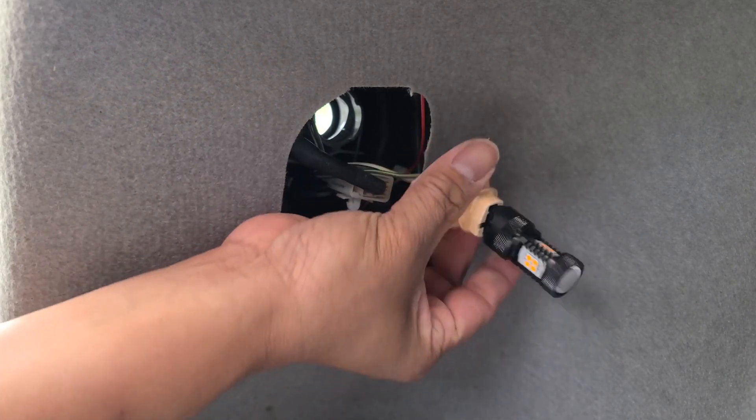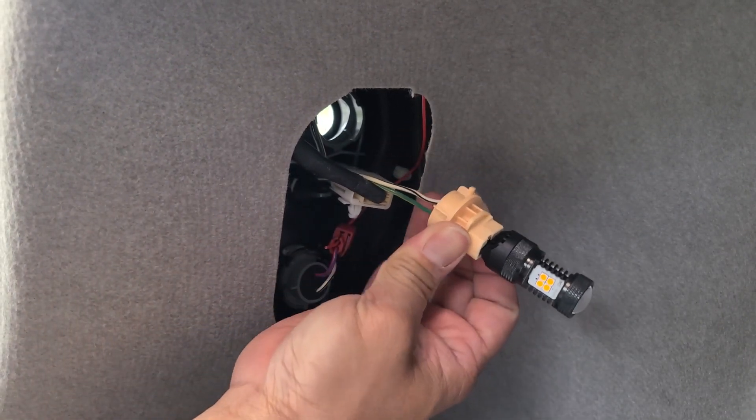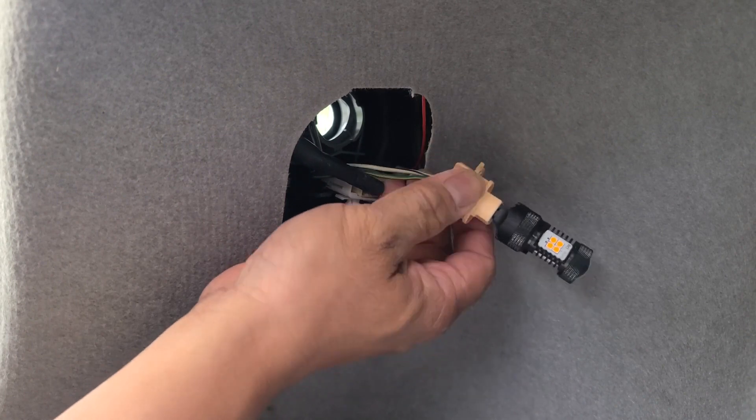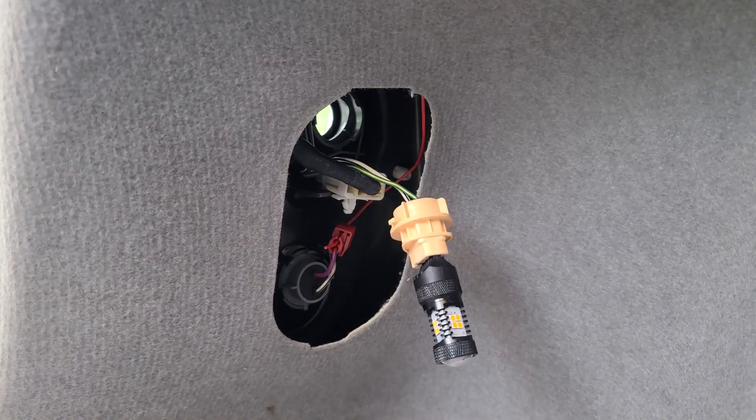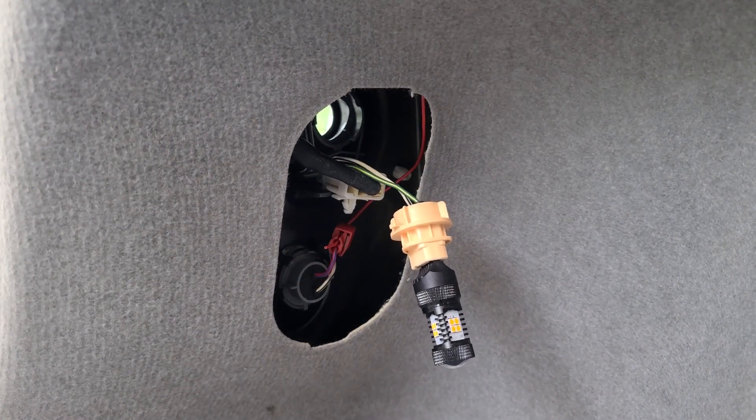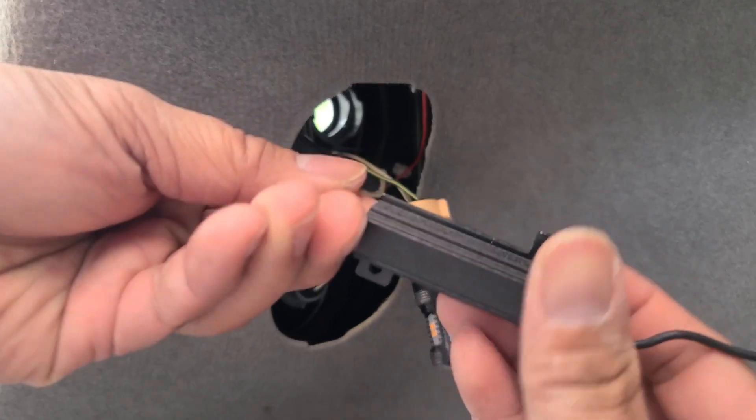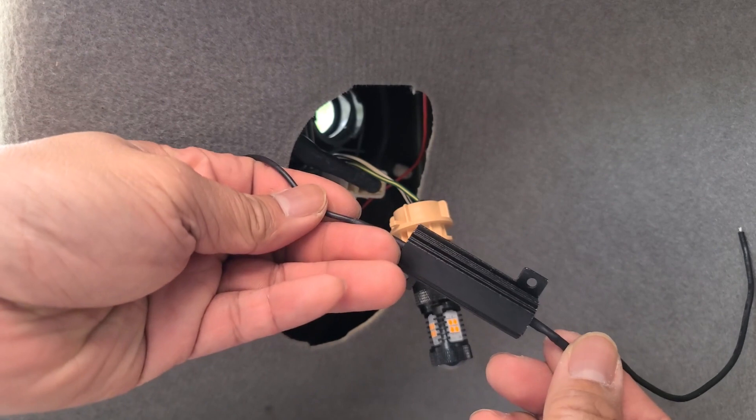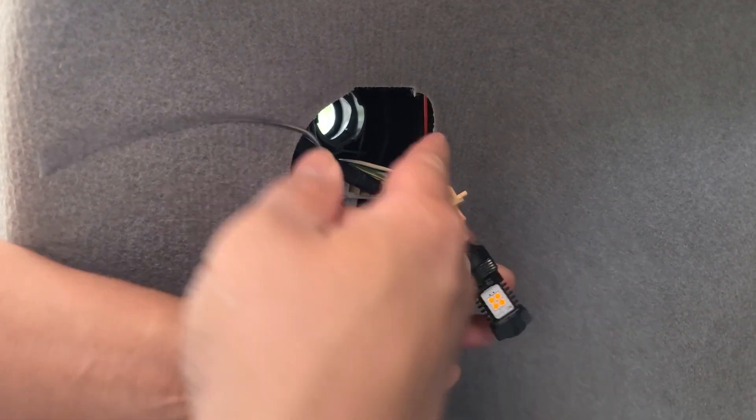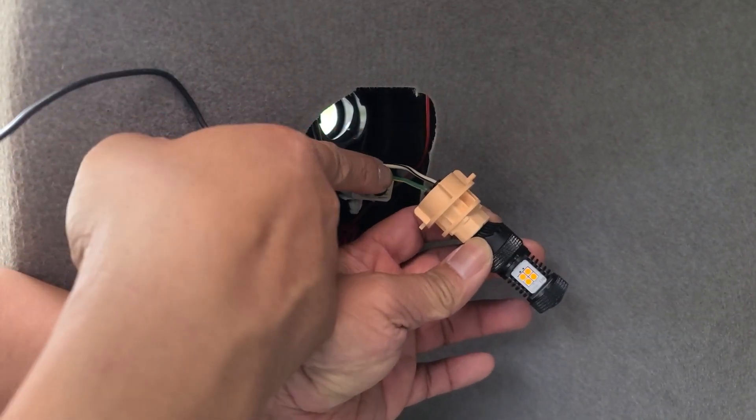So we have two wires here. Now we're just going to connect the load resistor, one end to this wire and one end to this wire.